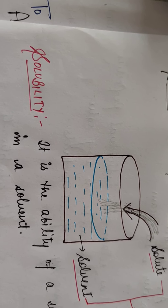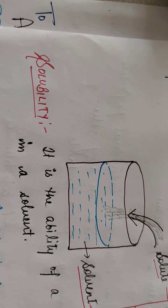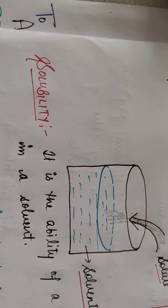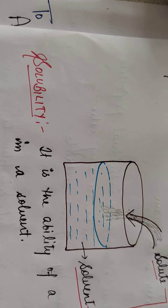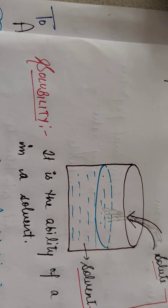Now, the amount of solute that the solvent can dissolve — that is, the ability of a solute to get dissolved in a solvent — is known as solubility.